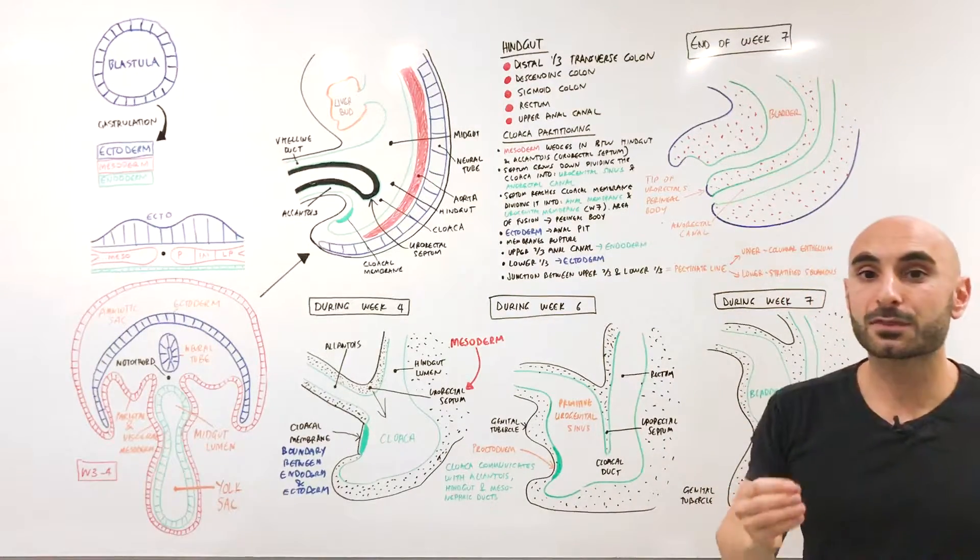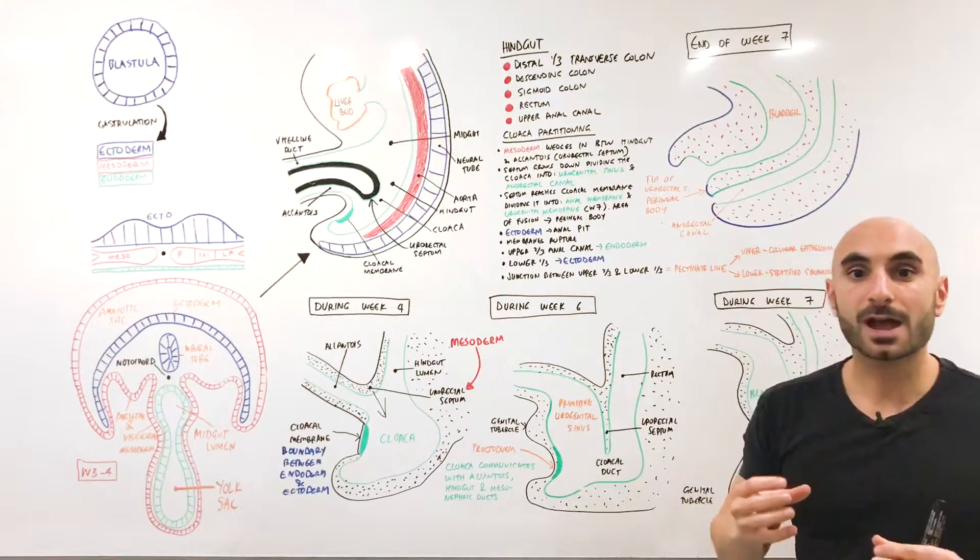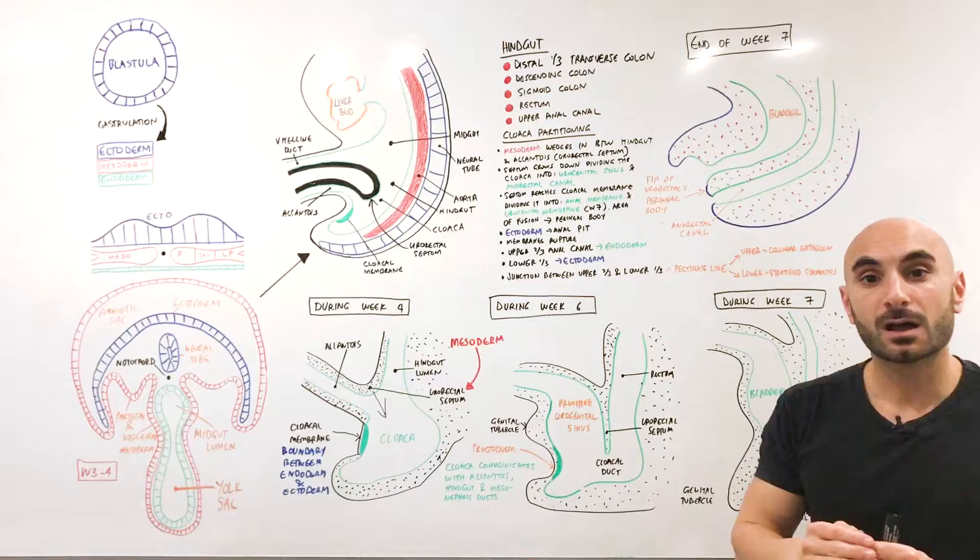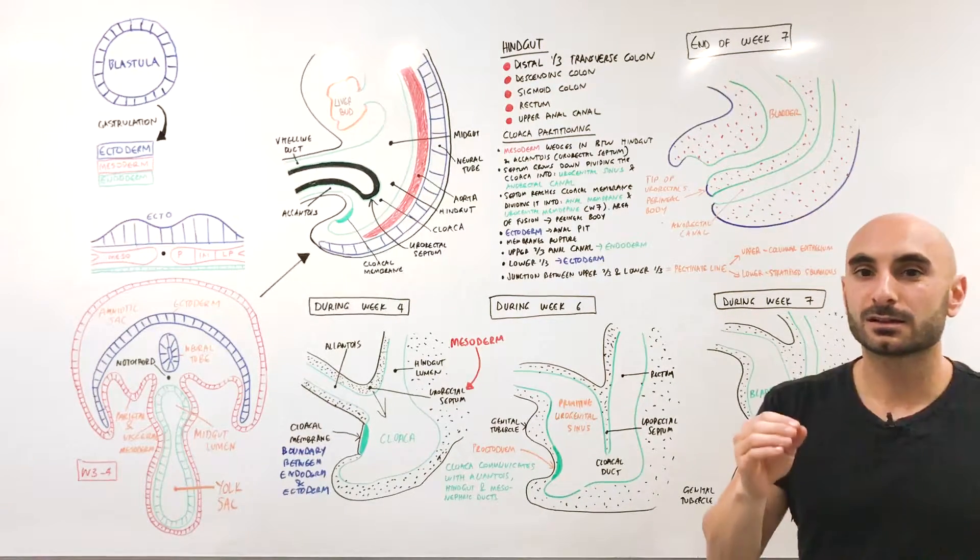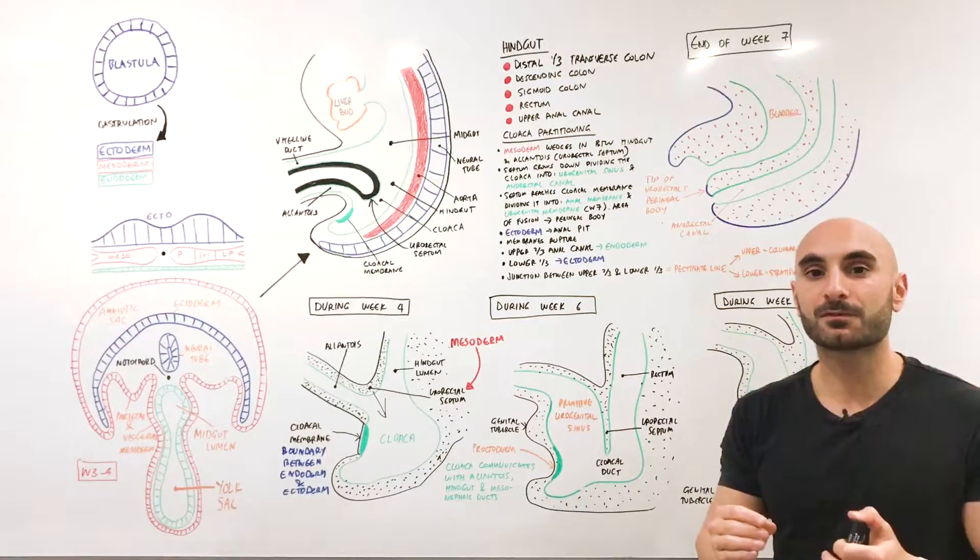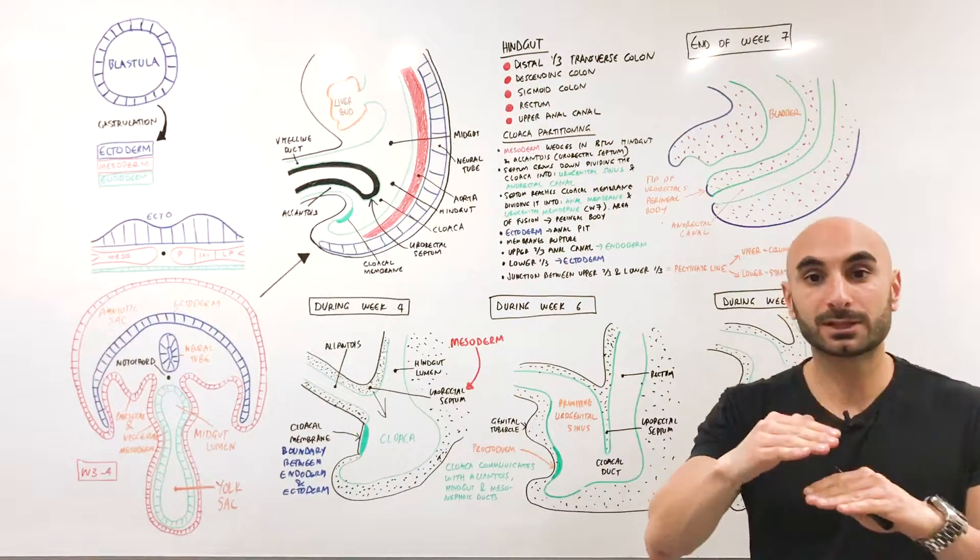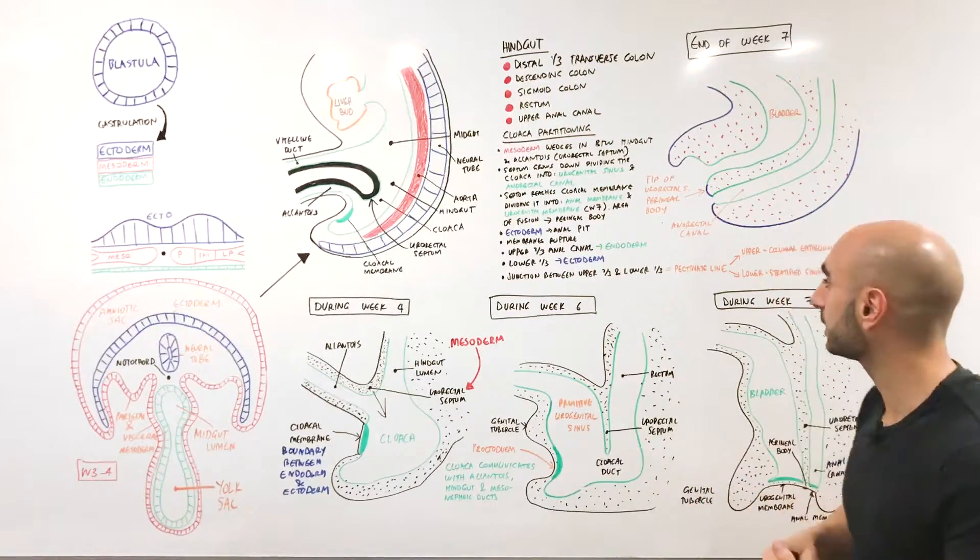The external one-third of the anal canal is stratified squamous cells from ectoderm. The upper two-thirds is columnar cells because they come from endoderm. The junction between that third and the two-thirds is called the pectinate line.